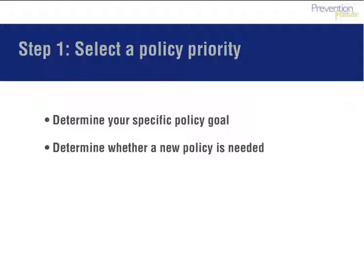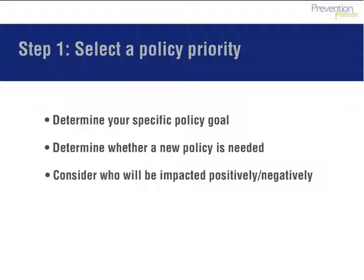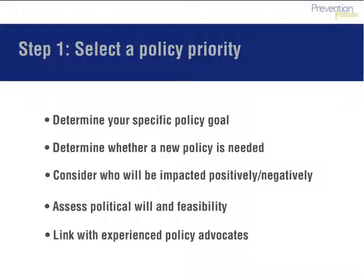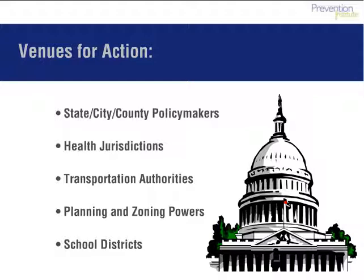Once policy goals are identified, it is time to select a specific policy for focused advocacy efforts. For example, many states have laws already on the books about the required minutes of physical education that children should receive in school, but there is generally little or no enforcement of this law. Consider who will be impacted by the policy and the ways they will be impacted. Also, examine the political climate and work with advocates and people who understand the process. At this step, you'll want to research recent policy activities and consider whether administrative or legislative action is needed. With a specific policy priority in mind, determine the jurisdiction or jurisdictions responsible for the type of policy being considered. Councils, boards, commissions, districts, and authorities are among the key policy-making bodies in any local or regional jurisdiction.